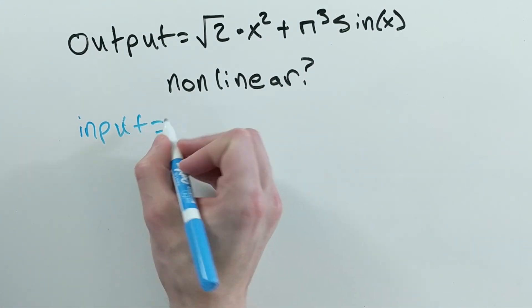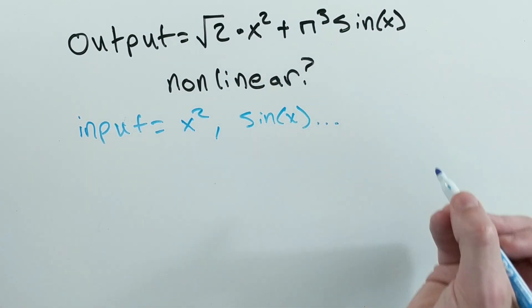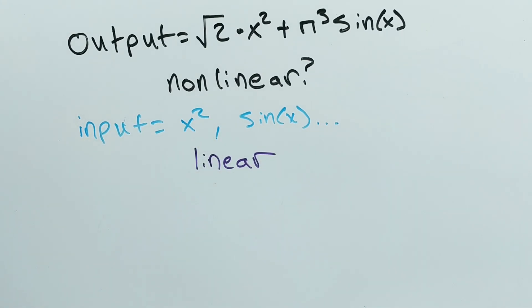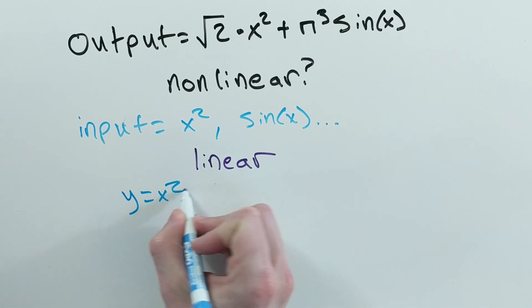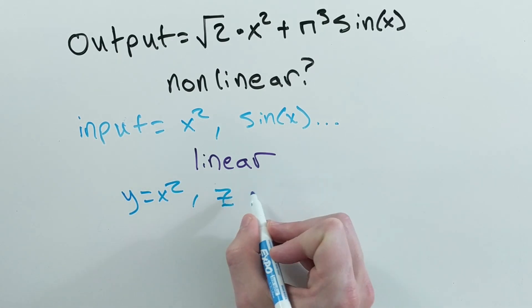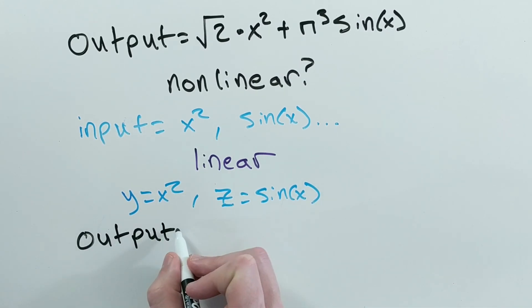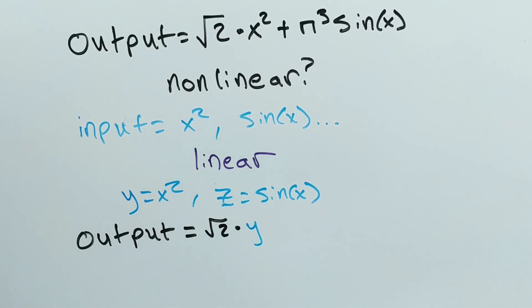However, if the inputs into the network are x squared and sine x, then you know that the network did a linear transformation. It's a linear transformation since the output can be written as a linear combination of the inputs. That is, if we say y equals x squared and z equals sine x, we can immediately see that the square root 2 times y plus pi cubed times z is a linear combination of y and z.